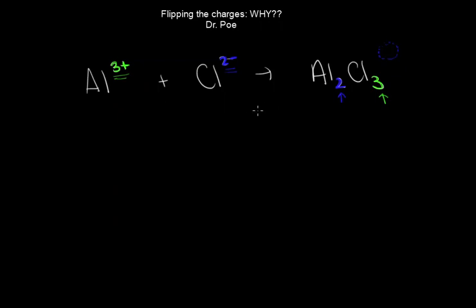We've got Al³⁺ and we've got Cl²⁻. If we added these up exactly as they are with one of each, overall the charge would be 3 positives minus 2. The charge would be positive 1. We don't see that charge here. It can't possibly be that.